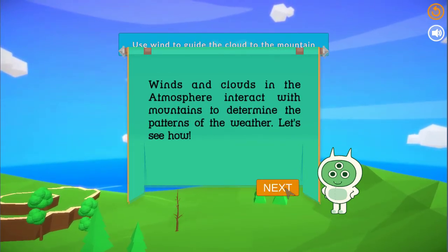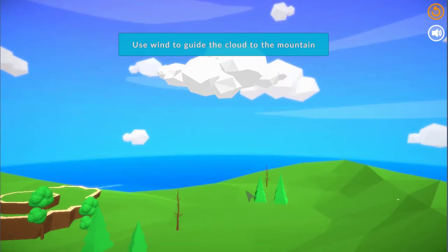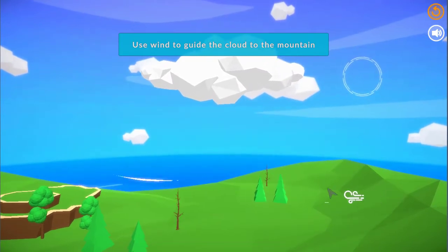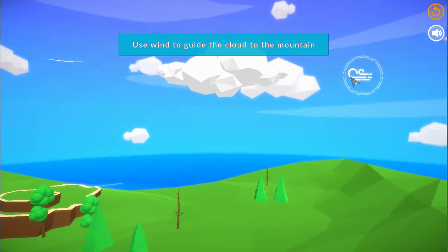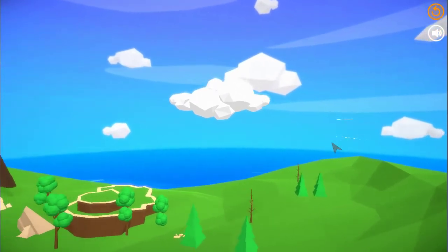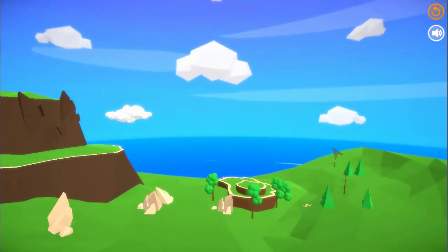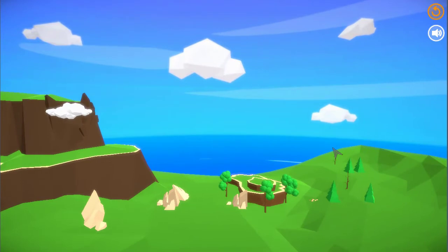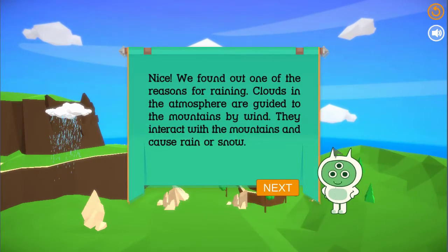Winds and clouds in the atmosphere interact with mountains to determine the patterns of the weather. Let's see how. Nice! We found out one of the reasons for raining. Clouds in the atmosphere are guided to the mountains by wind. They interact with the mountains and cause rain or snow.